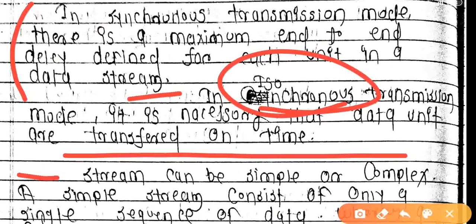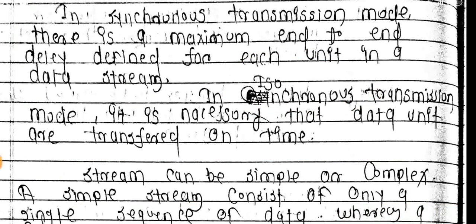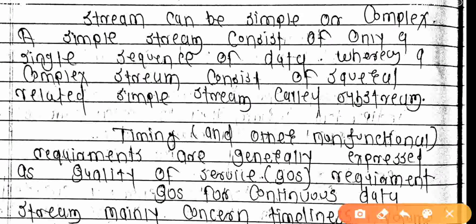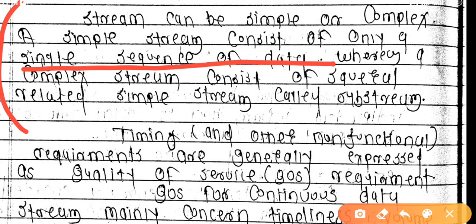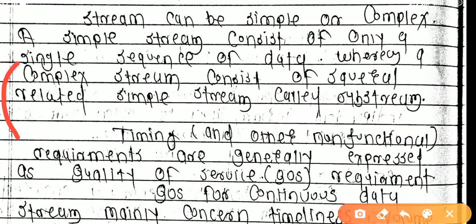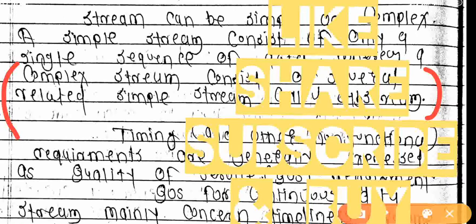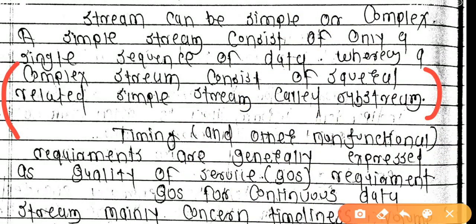A stream can be simple or complex. A simple stream consists of a single sequence of data. A complex stream consists of several related sub-streams — for example, a video stream may have audio, video, and image sub-streams.